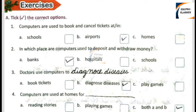Number 1: Computers are used to book and cancel tickets at blank. Option A: Schools. Option B: Airports. Option C: Homes. Option B, Airport, is the right answer.